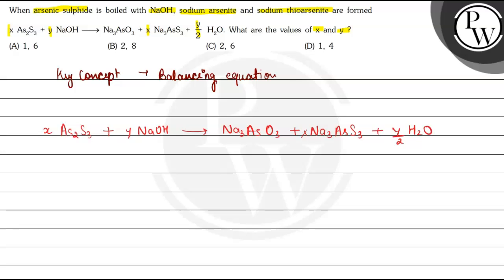First of all, if we see the number of As on the reactant side it is 2 and on the product side it is also 2. That means if we write X equal to 1, then As is balanced. Now move on to Na. Here only 1 sodium present in NaOH, and on the product side there are 3 plus 3, that means 6 sodium are present on the product side. So if we multiply here with 6, then on the reactant side there is also 6 sodium.